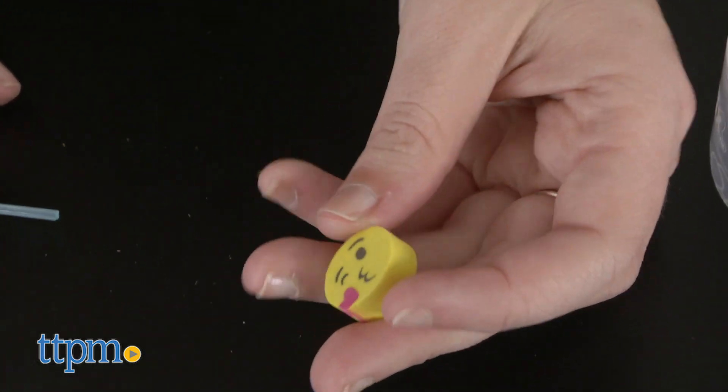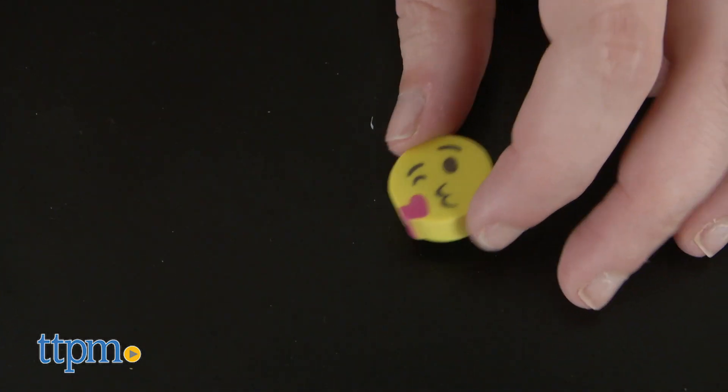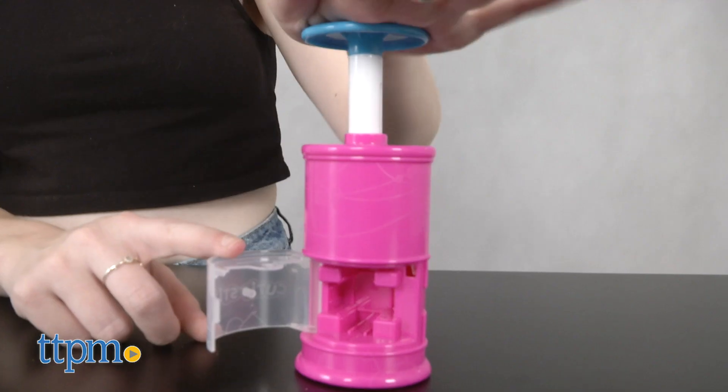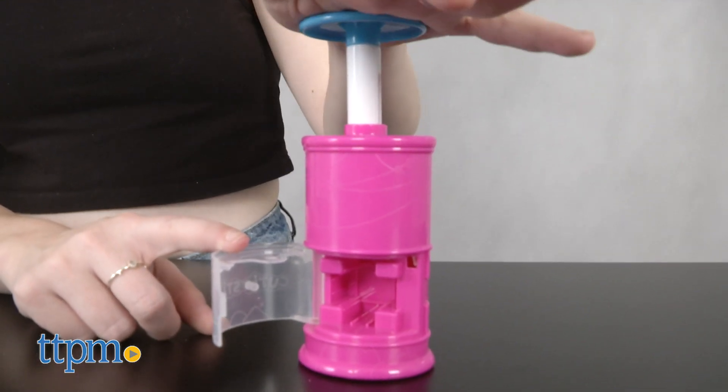What we like about both the coring unit and cutting unit is that safety features are built-in. For example, the coring cutter will not work unless the container is inserted and the safety door is shut.